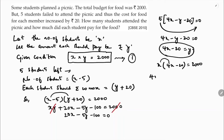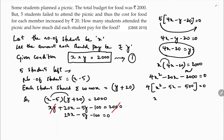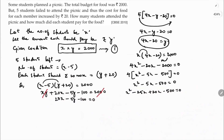Substituting into equation one: x(4x − 20) = 2000, so 4x² − 20x − 2000 = 0. Taking 4 as common: x² − 5x − 500 = 0.